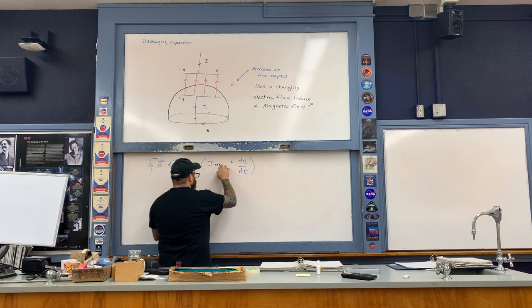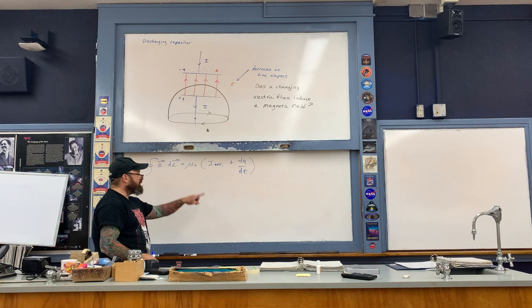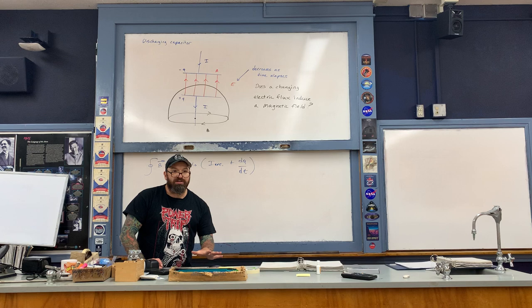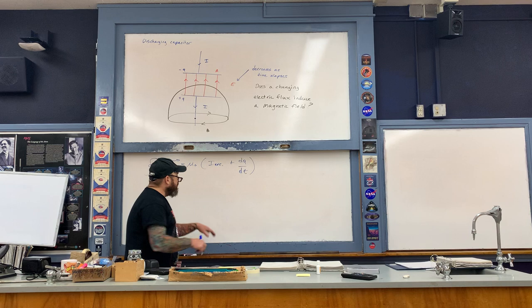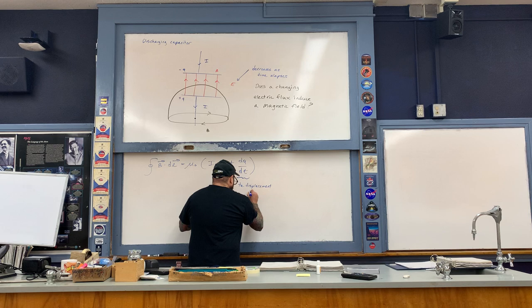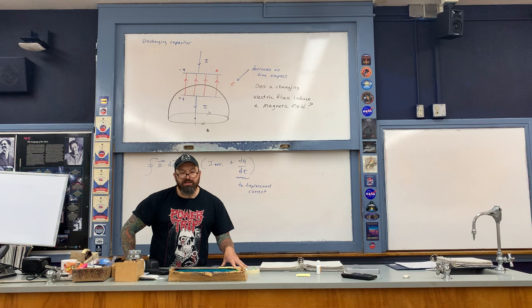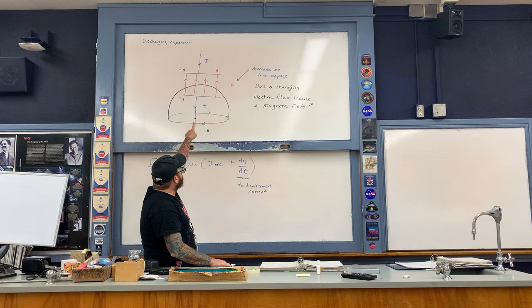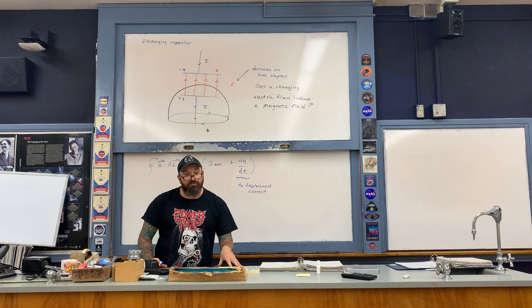Notice that there is now an extra term in parentheses within Ampere's law, still being multiplied by the permeability of free space constant. This extra term is a current — specifically, what I'm describing here is the decreasing charge on the capacitor's plate as a function of time. This quantity Maxwell refers to as the displacement current, describing the decreasing charge on the capacitor's plate as a function of time.